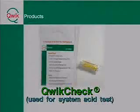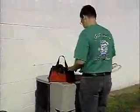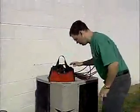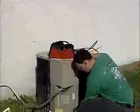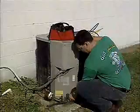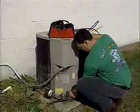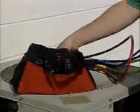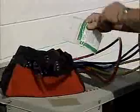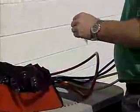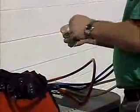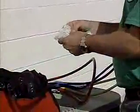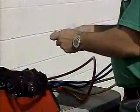QuickCheck tests for acid in a system in just five to ten seconds. To perform an acid test, simply hold QuickCheck against the low-side Schrader valve of an operating system. This method allows the technician to perform an acid test without removing oil, which is a key feature making testing a typical hermetic system simple and easy.